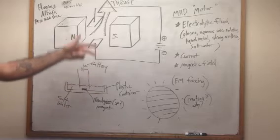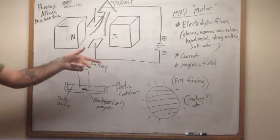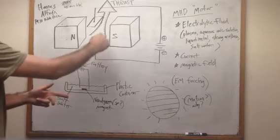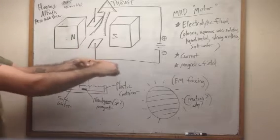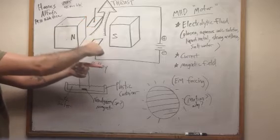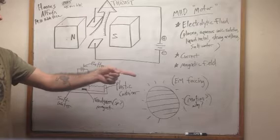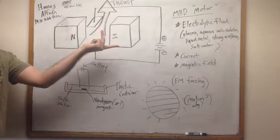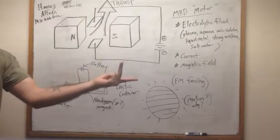So if you have a thrust going in that direction, what you can do is just use this. Which way is the magnetic field going? This direction. This is the magnetic field. And you have your electric current flowing from the two plates. So in order to do that, you just flip this up like that.